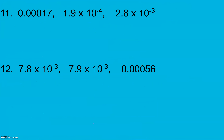Give number 11 a try. Again, I want to put all my numbers in scientific notation so that they are comparable. I take my number parts — my non-zero digits, 1 and 7 — with exactly one number in front of my decimal. Then I count how many places I'd have to move to get back: 1, 2, 3, 4. And since I'm dealing with really small numbers and I had to move towards negative numbers, it's going to be 10 to the negative 4th.